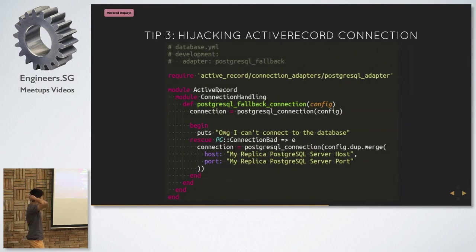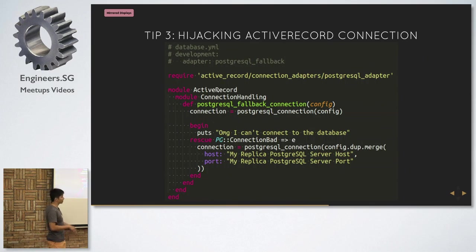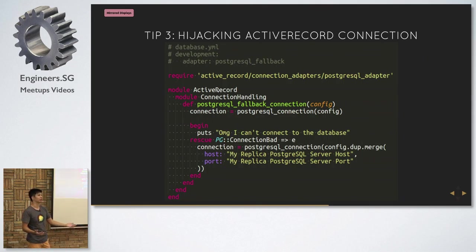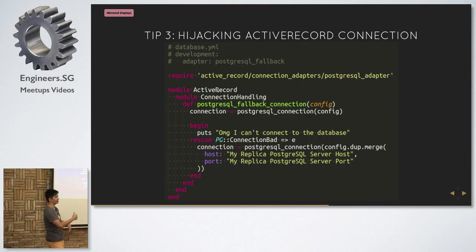Tip number three is actually something related to work I did recently. My task was to create a fallback adapter for Postgres. We run a master server and then a replica server, so if the master server is down you want to fall back to the replica server. I don't know if you can do it at the load balancer level between two Postgres servers.